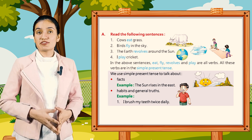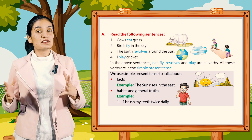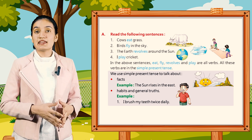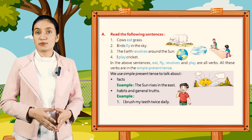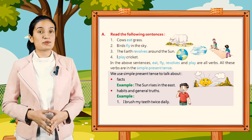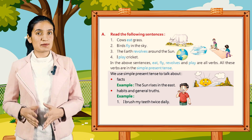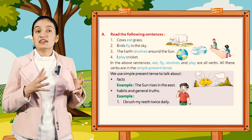In the above sentences, eat, fly, revolves, and play are all verbs. All these verbs are in the simple present tense.